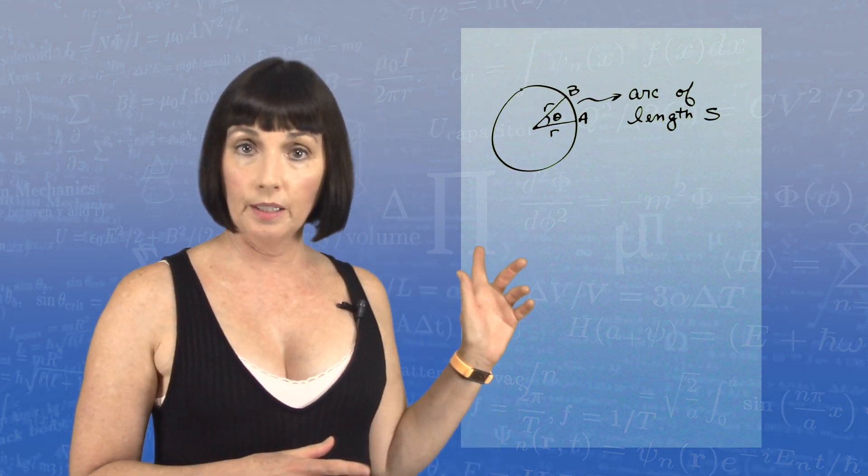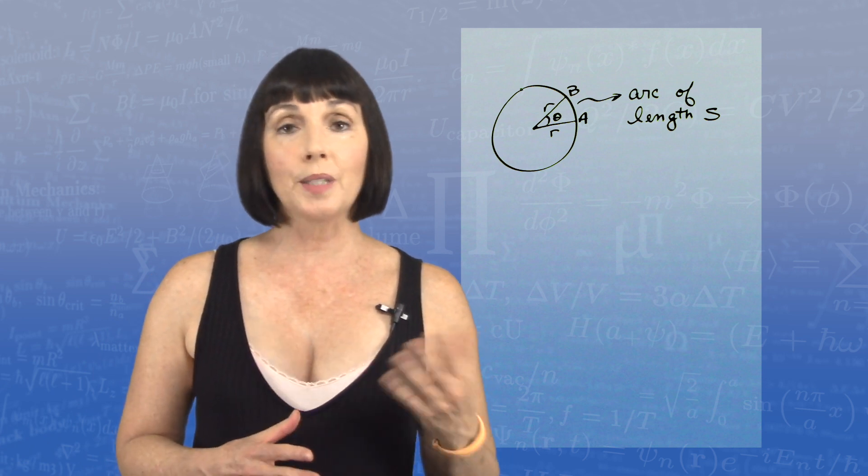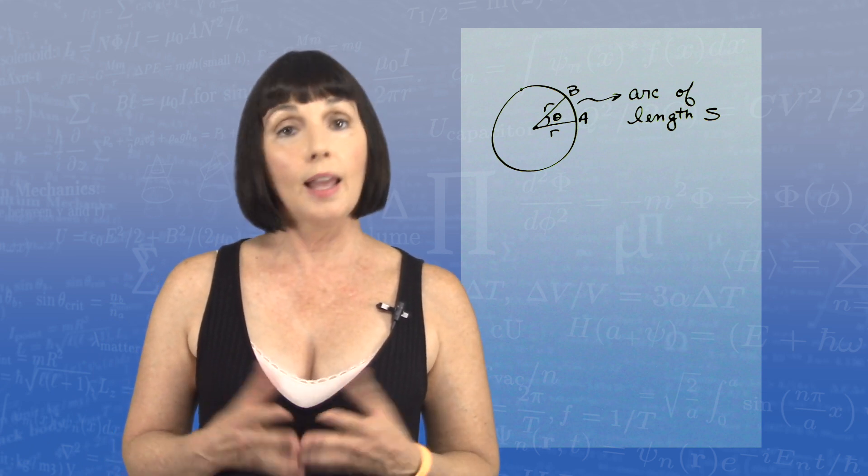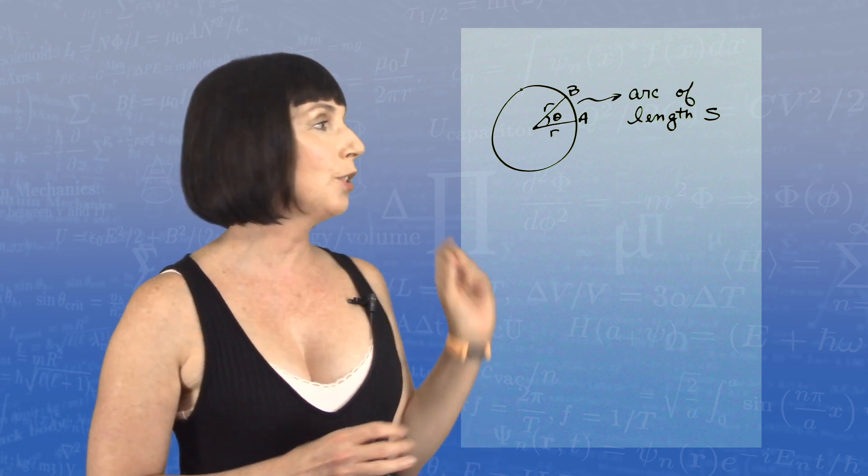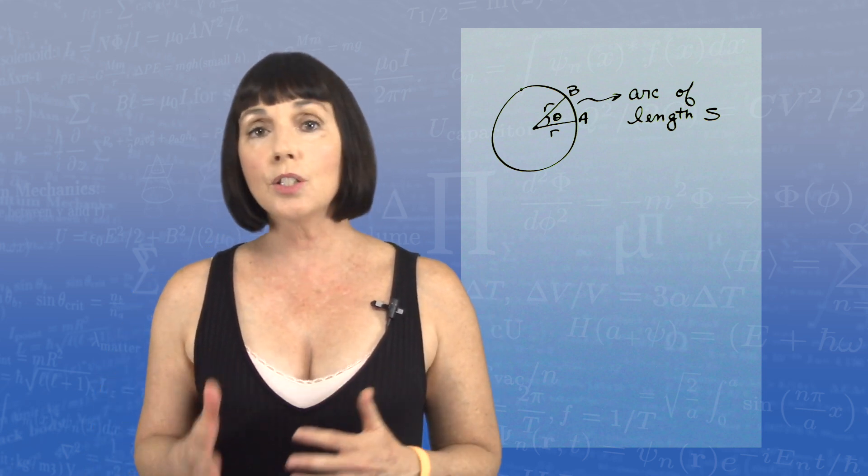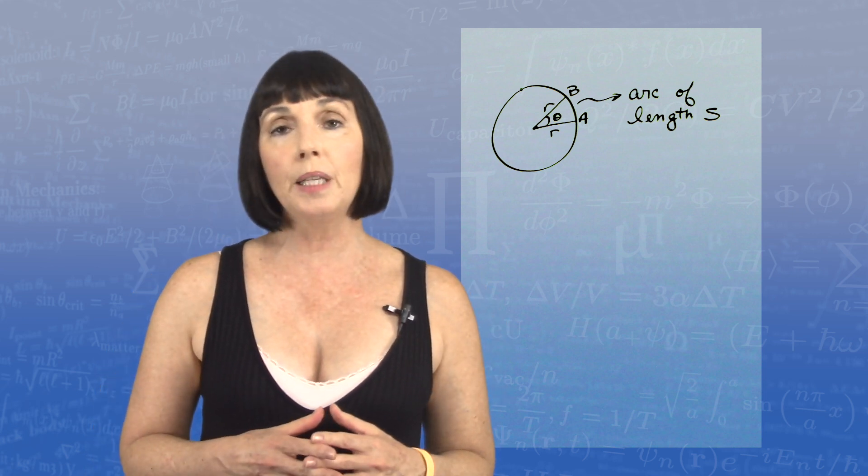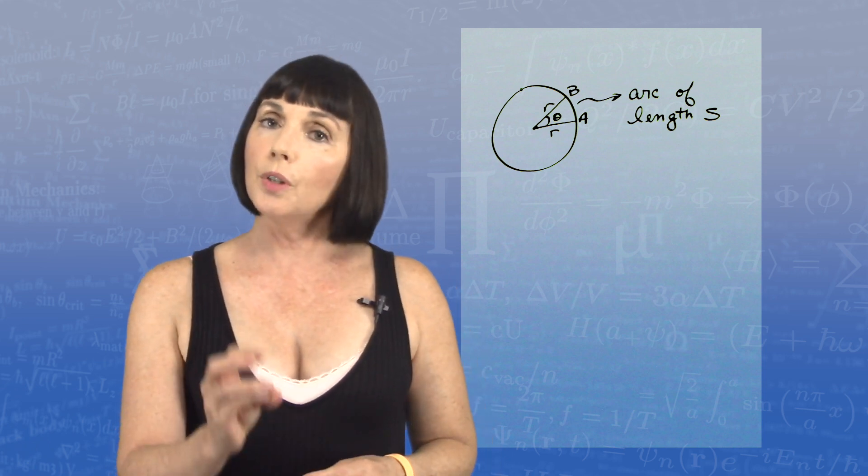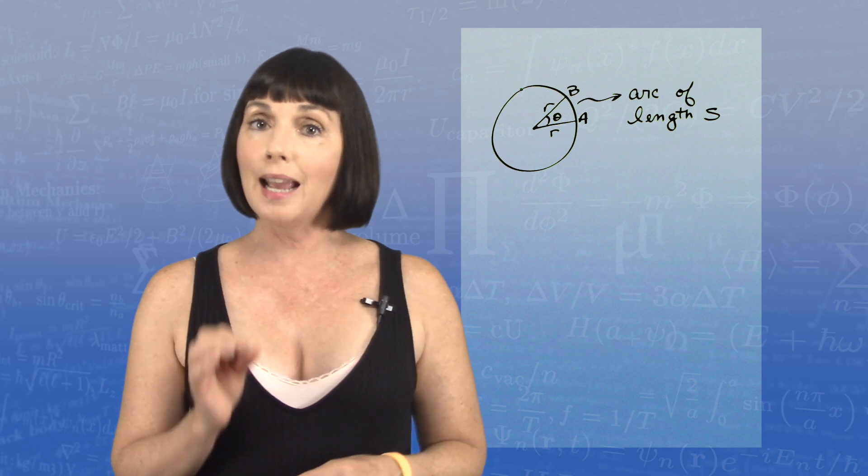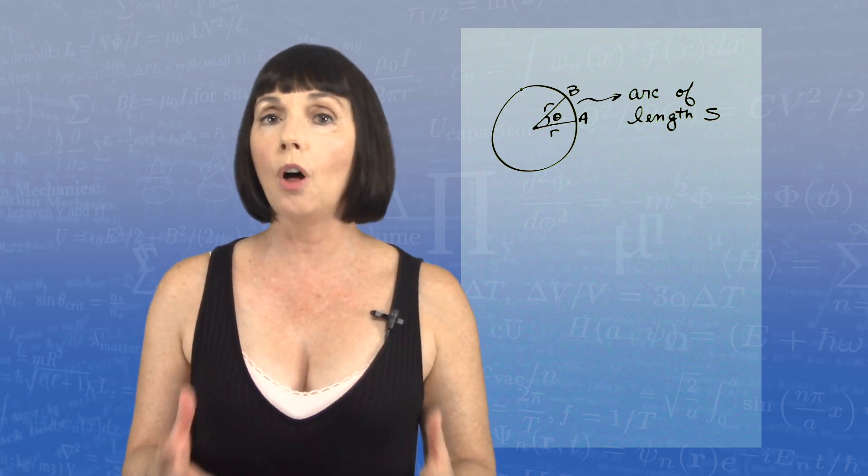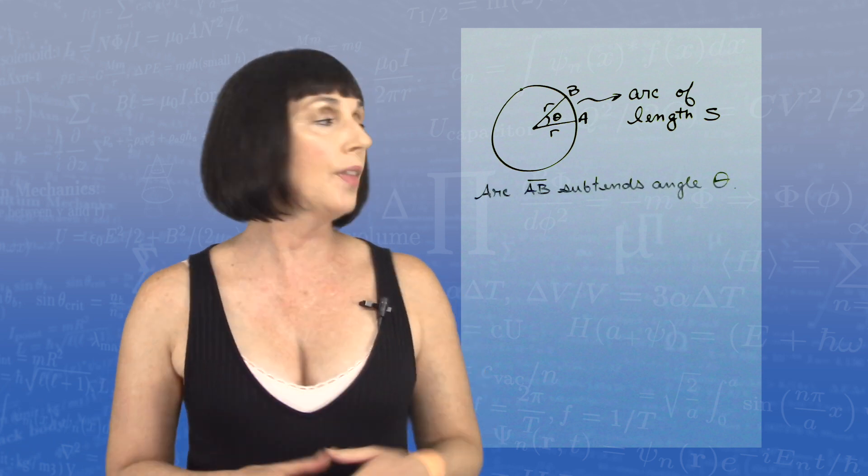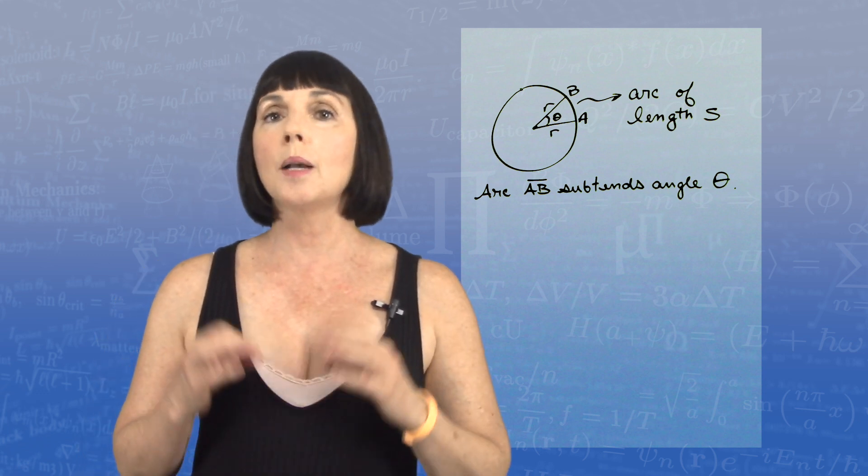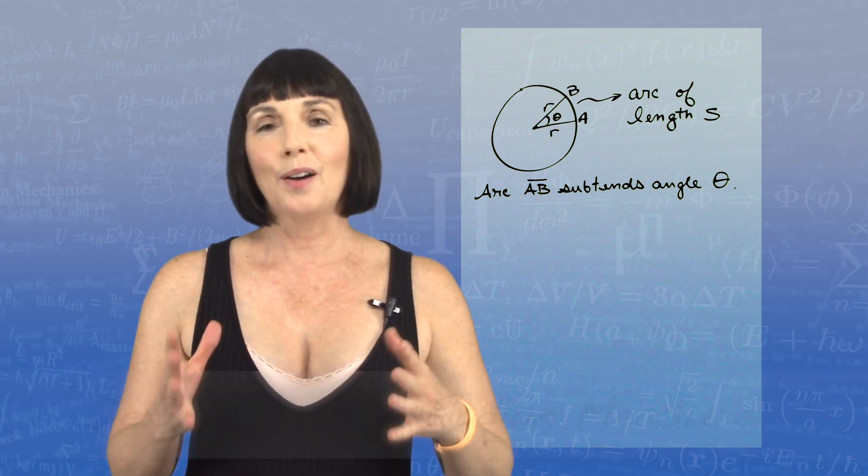I have a circle here, and I have one radius that goes from the center to point A on the circle, and another radius that goes from the center to point B on the circle. That distance along the circle between A and B is called an arc, and we'll just give it length s. You'll notice those two radii form an angle at the center, which we'll call theta. We say that arc AB subtends angle theta.